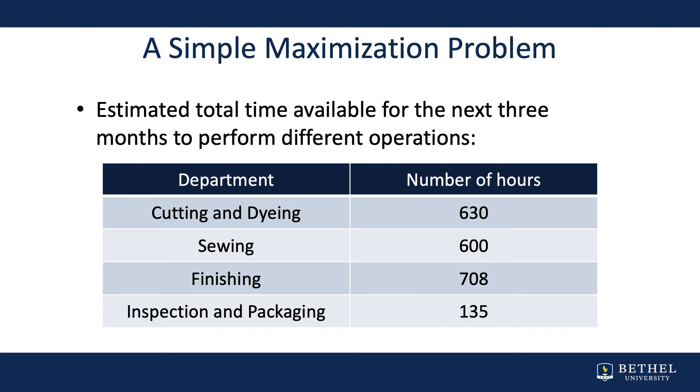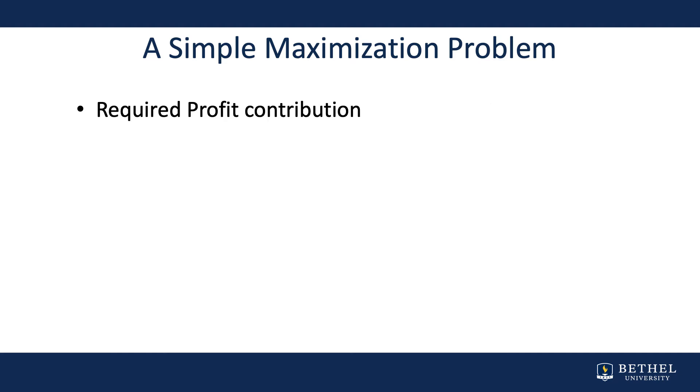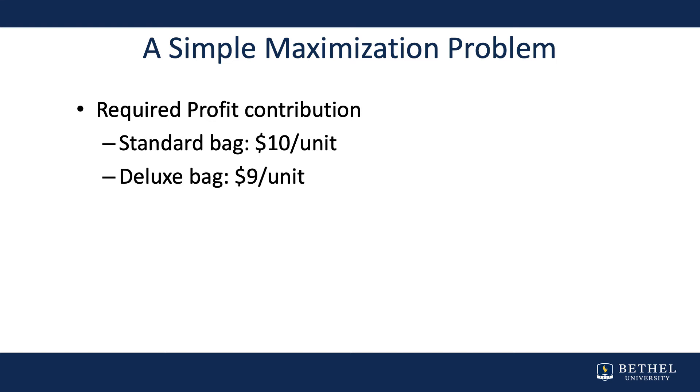The estimated total time available for the next three months is: 630 hours for cutting and dyeing, 600 hours for sewing, 708 hours for finishing, and 135 hours for inspection and packaging. The required profit contribution is $10 in profit per unit for each standard bag and $9 in profit per unit for each deluxe bag. We now have all of the constraints and understand the profit that each bag will drive.